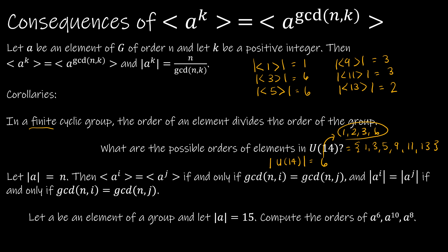The other property says: let the order of A equal N — meaning A to the N is equal to E and N is the smallest value for which that is true. Then the cyclic subgroup generated by A to the I is equal to the cyclic subgroup generated by A to the J, if and only if the GCD of N and I equals the GCD of N and J. The second part is that the number of elements in each of those subgroups will be the same. Let's take a look at an example.